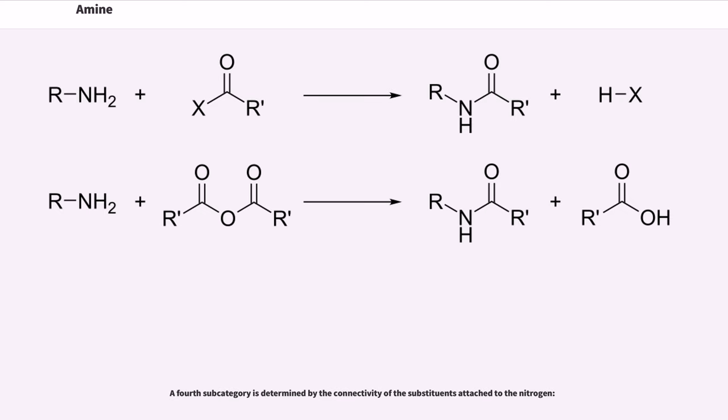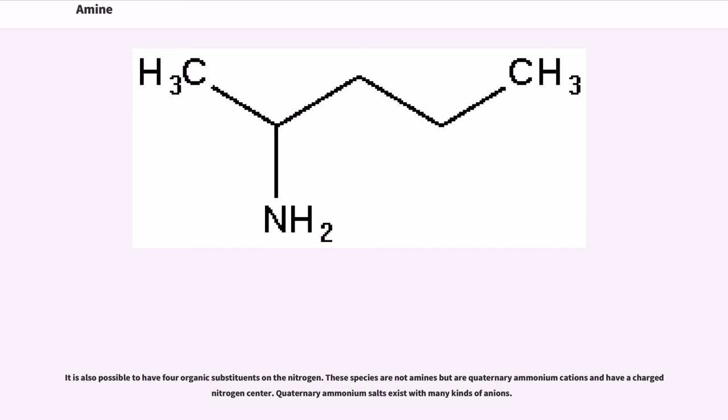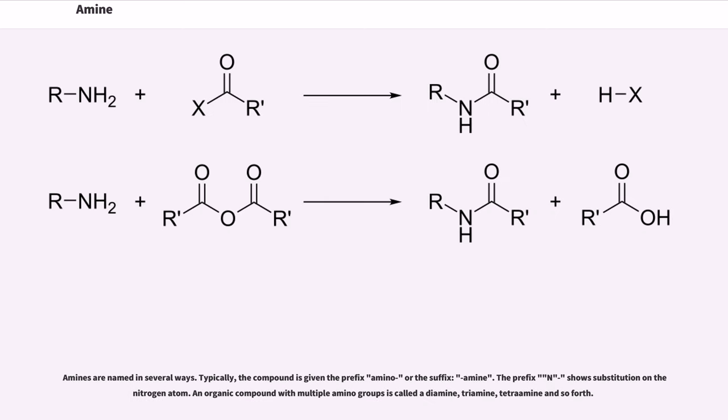A fourth subcategory is determined by the connectivity of the substituents attached to the nitrogen. It is also possible to have four organic substituents on the nitrogen. These species are not amines but are quaternary ammonium cations and have a charged nitrogen center. Quaternary ammonium salts exist with many kinds of anions.